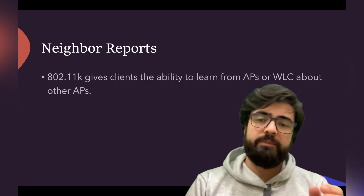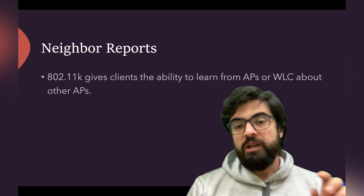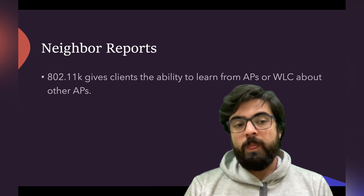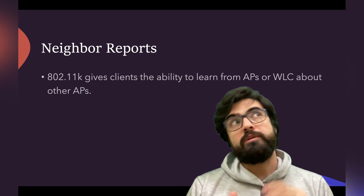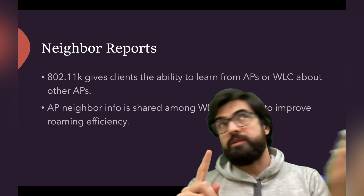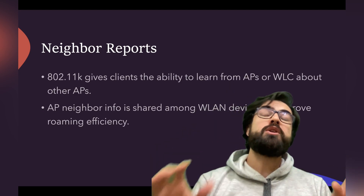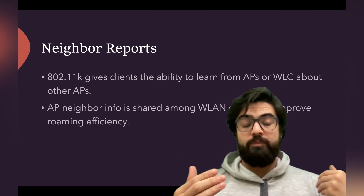Finally, the fourth category is neighbor reports. The main purpose of neighbor reports is to support roaming. This feature gives the AP the ability to know about all neighboring APs in the area, which is a starting point for enabling better roaming. A separate video will cover roaming in more detail.